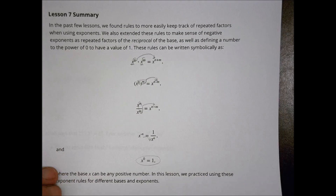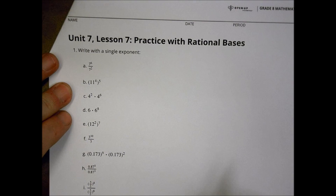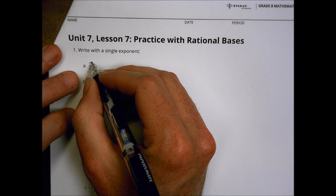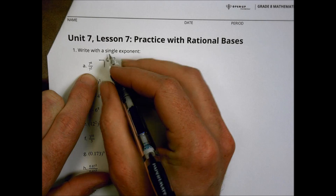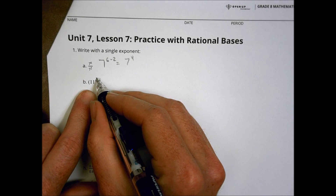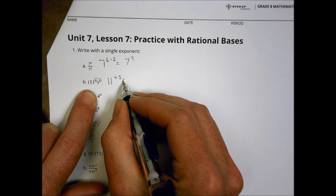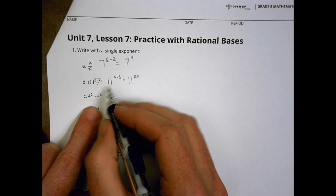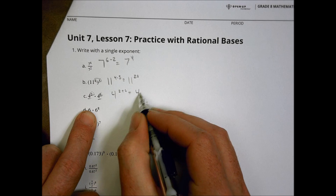Let's take a look at your homework tonight. Pause this, do your homework, then let's check it together. Beginning here, we have seven to the six minus two because it's a fraction, so six minus two is four — seven to the fourth power. Here we're multiplying, so that becomes eleven to the four times five, which is eleven to the twentieth. Here the base is the same, so we add: four to the two plus six is four to the eighth power.